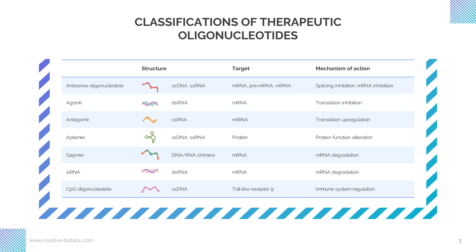Aptamer is single-stranded DNA or RNA with a length between 20 to 100 nucleotides, which adopts a three-dimensional structure that allows it to bind to protein target sites with high specificity. Gapmers are single-stranded short DNA antisense oligonucleotide structures with RNA-like segments on both termini of the sequence. These linear pieces of genetic information are designed to hybridize into a target piece of mRNA. Gapmer is also classified as an optimized form of ASO.